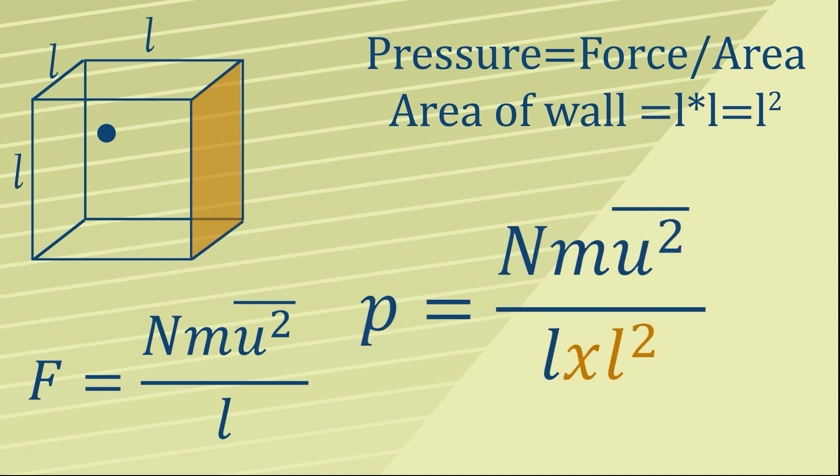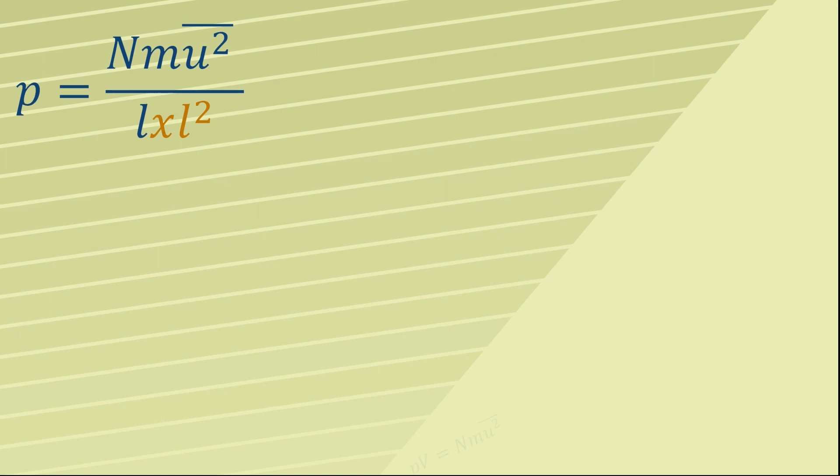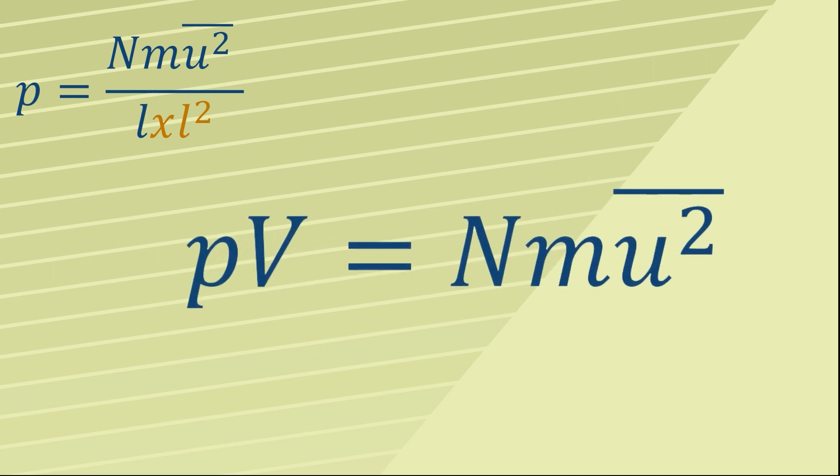Therefore, we can say that pressure equals Nm times the mean square speed divided by L³, and of course L³ is equal to volume. Therefore, we have volume on the bottom. Rearranging this leads us to a really simple and powerful formula: pressure times volume equals Nm times the mean square speed.